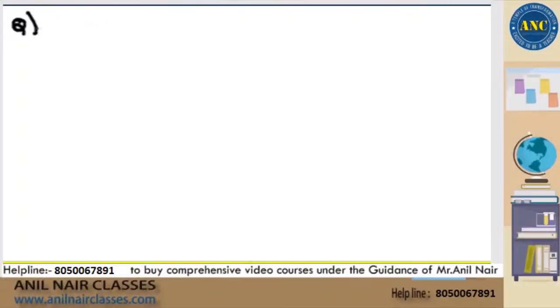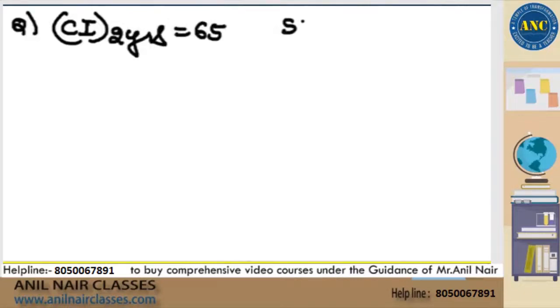Next, please write down. Compound interest for two years is 65. Simple interest for two years is 60. Find R percentage.